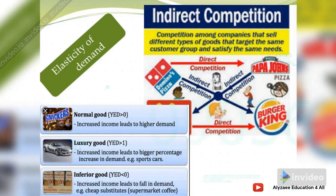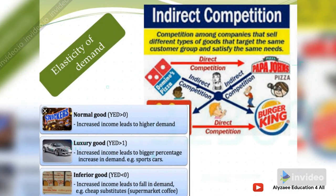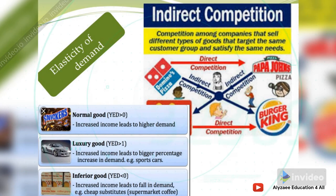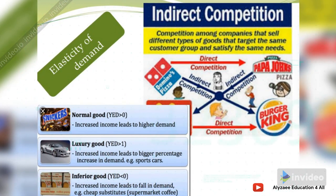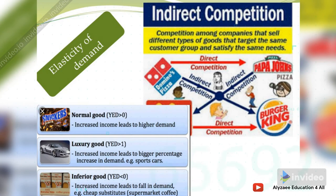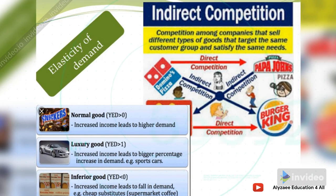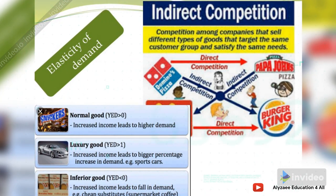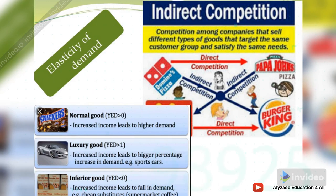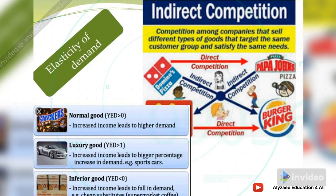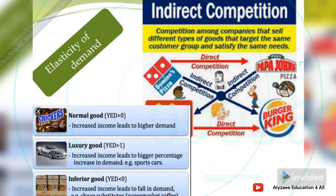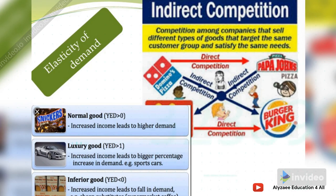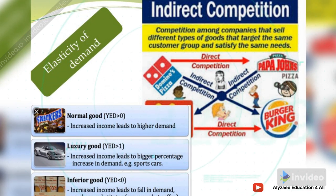Direct and indirect competition: companies that target the same customer and satisfy the same needs. For example, Domino's is in direct competition with Pizza Hut, while there is indirect competition between Domino's and Burger King or McDonald's. Direct competition exists between McDonald's, Burger King, and KFC. For normal goods, if income elasticity is greater than zero, increased income leads to higher demand, and if greater than one it leads to a bigger percentage increase.